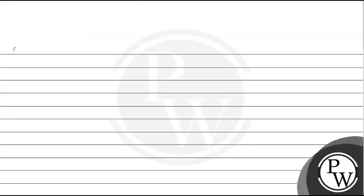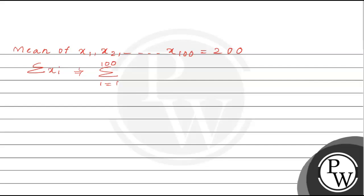In this question, we are given that the mean of x1, x2, and so on till x100 is equal to 200. To calculate the mean, we first need the sum of all numbers xi. The sum of all terms of an arithmetic progression is given by n/2 times (2a + (n−1)d), where d is the common difference and a is the first term.